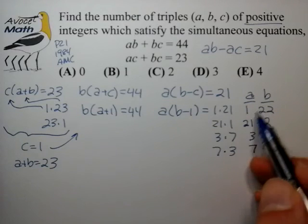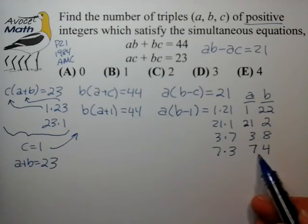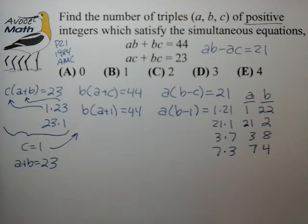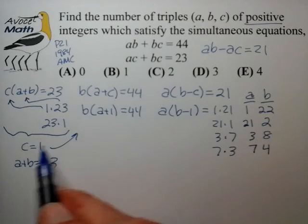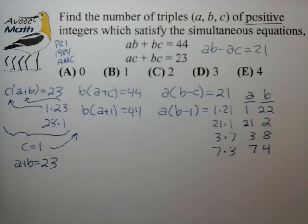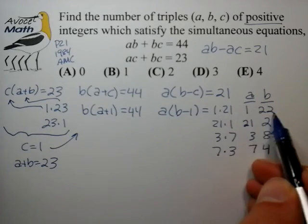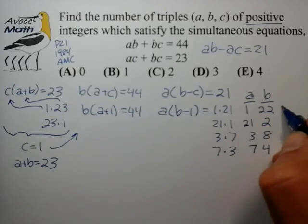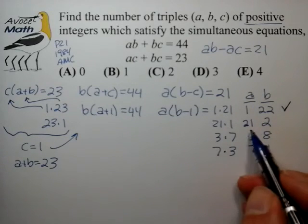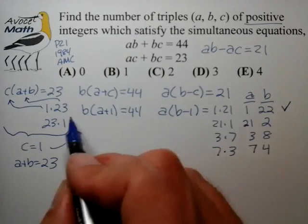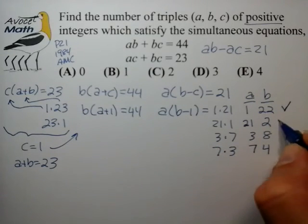Now we need to check these equation solutions with the second equation just to make sure that what we're doing here is consistent with all three equations. So if we plug a equals 1 in here, we have (1 plus 1) times 22, so that's 44. That's a valid solution. For 21 and 2, 21 plus 1 is 22, times 2 is 44. That's a valid solution.